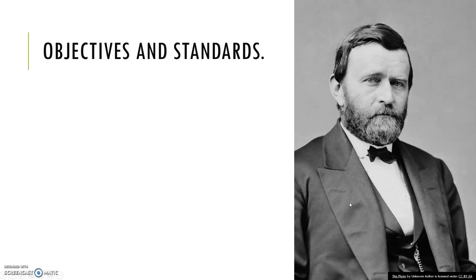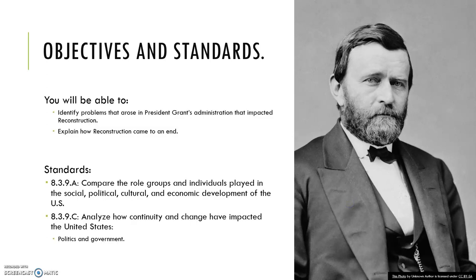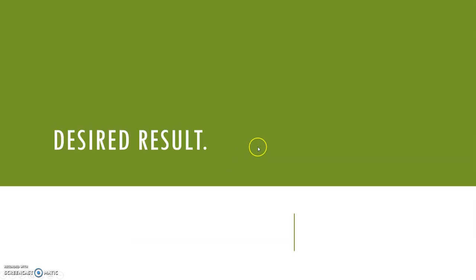Our objectives and standards: you will be able to identify problems that arose in President Grant's administration that impacted Reconstruction, and explain how Reconstruction came to an end. Our desired result: How did Reconstruction come to an end?